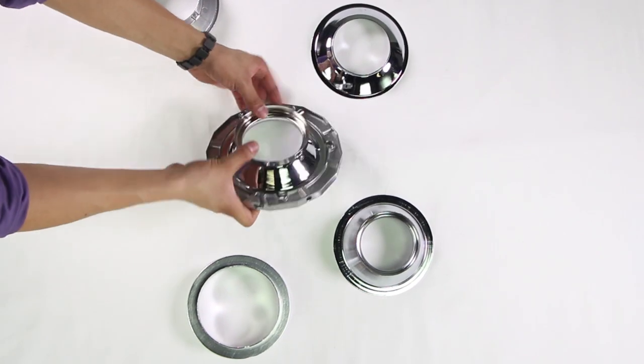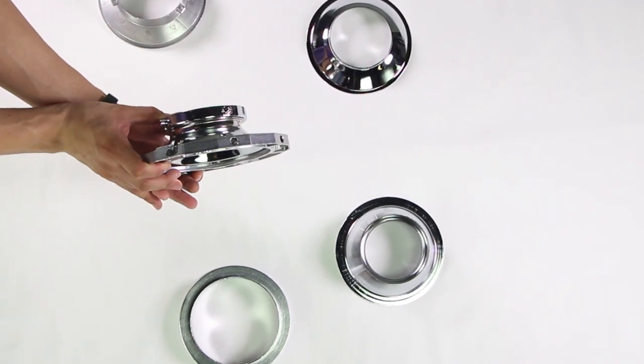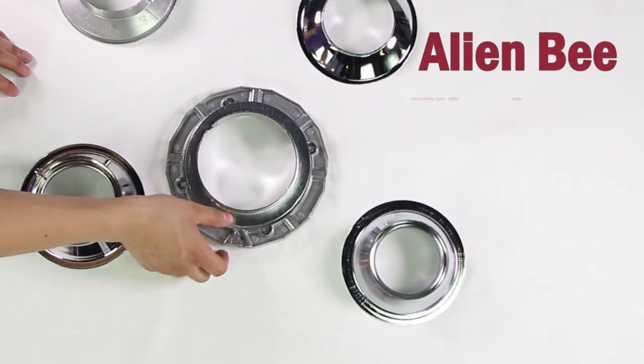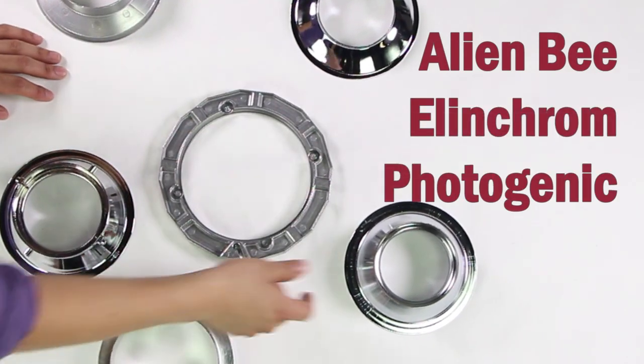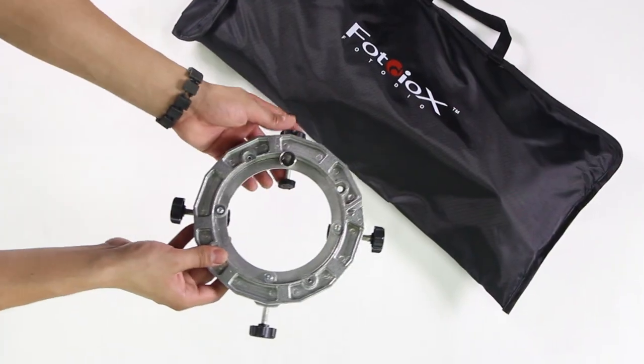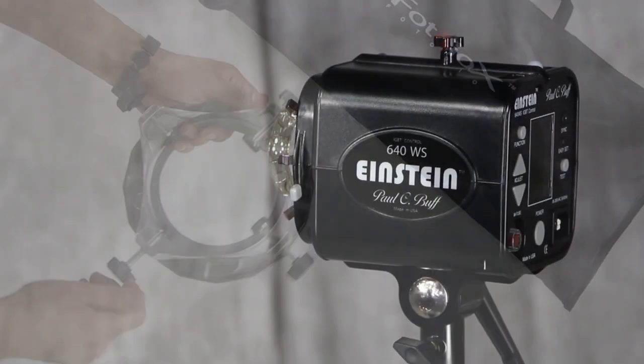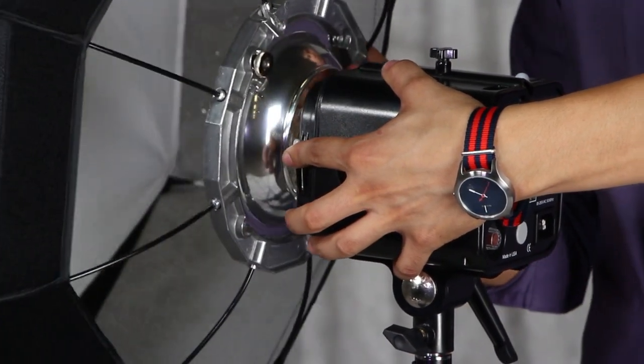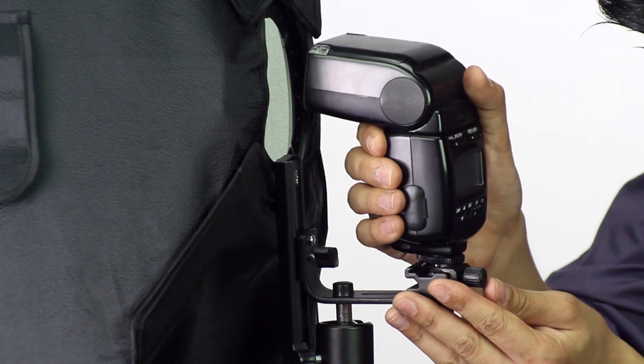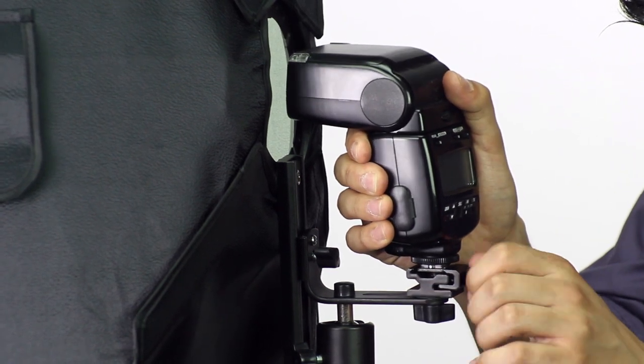PhotoDiox carries a full line of speedring inserts to make our softboxes compatible with the majority of lighting instruments out there: Alien Bees, Elinchrom, Photogenic, Profoto, Bowens, even a universal insert to fit practically any light. The speedring makes it easy to swap softboxes between lights and lets you rotate the softbox too. You can even attach a flash right to the speedring mount using our L-bracket.